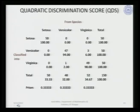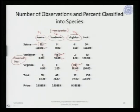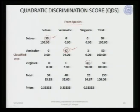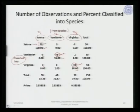Let us look at what we get for the quadratic discriminant score. This is the similar type of table showing the number of observations and percent classified corresponding to a quadratic discriminant score. From which species observations are coming: 50 correctly classified, 47 correctly classified, and 49 out of 50 correctly classified. We observe a very high percentage of correct classifications — almost the same as for the linear discriminant function.